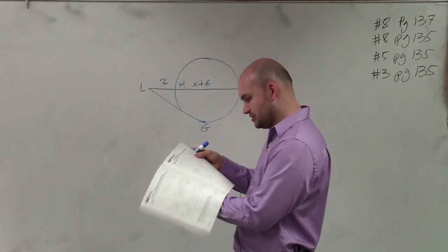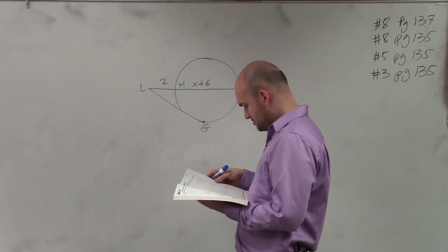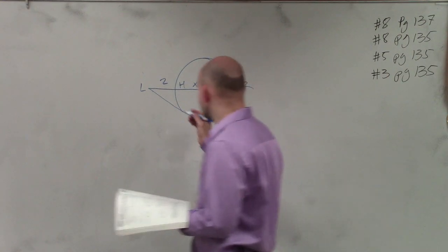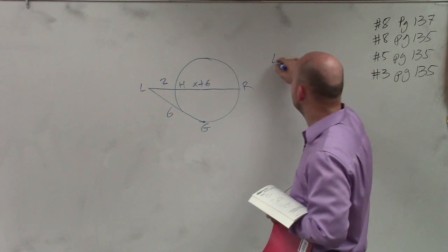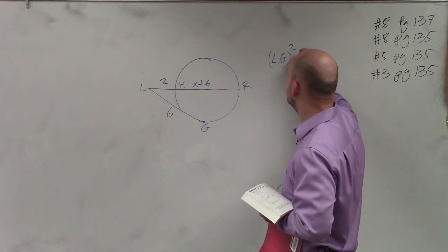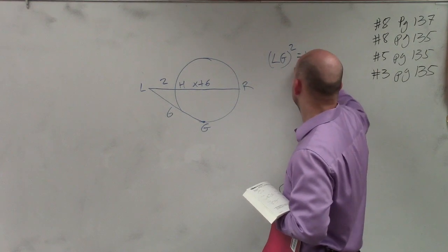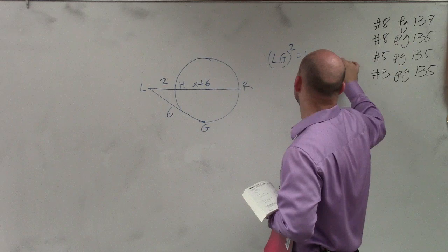Are we trying to figure out lg? lg is 6. Okay, we're trying to figure out what x is. So therefore, the relationship is lg squared equals lh times lr.